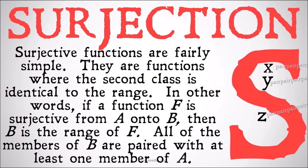All of the members of B are paired with at least one member of A. Note that this is interestingly counterposed with injection, where all the members of B are paired with at most one member of A, leaving bijection where they're paired with exactly one member of A. So surjection says at least one, injection says at most one, bijection says exactly one.